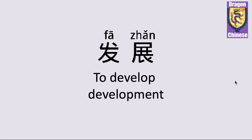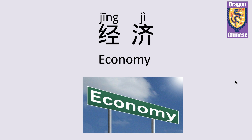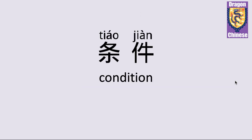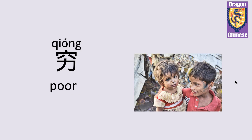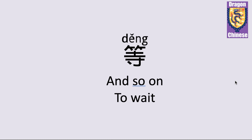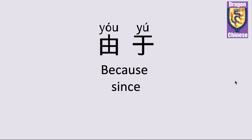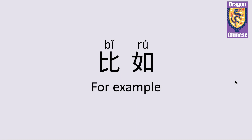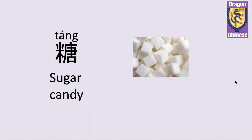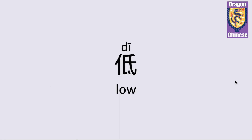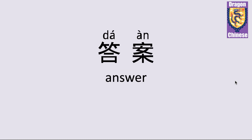关键 — key, crux. 将来 — future. 发展 — to develop, development. 经济 — economy. 条件 — condition. 富 — rich, wealthy. 虫. 等 — and so on; it can also mean to wait. 由于 — because. 比如 — for example. 橡皮 — rubber, eraser. 糖 — sugar, candy.